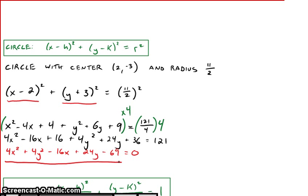This equation is the exact same as this equation, it's just written differently. If we were to graph both of these formulas we would end up with the exact same circle, with center at (2, -3) and radius 11/2.